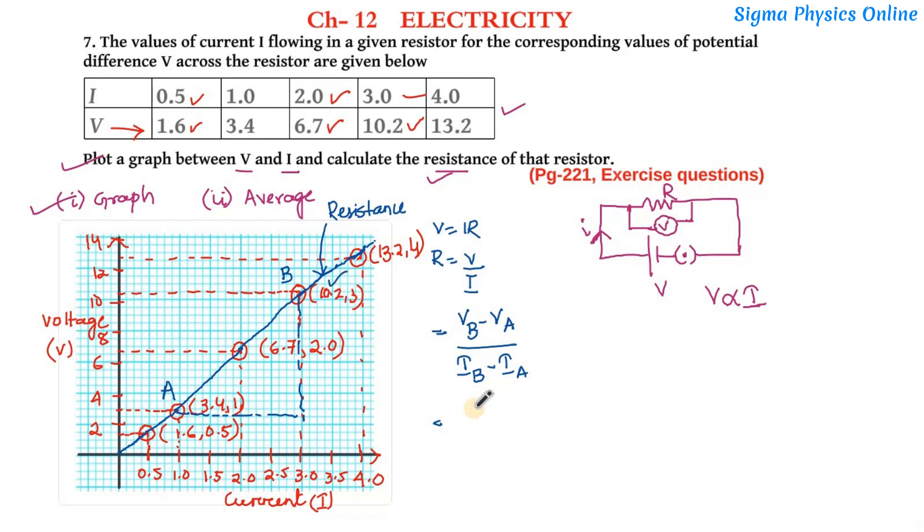Now the voltage at point B is 10.2 minus voltage at A is 3.4, divided by the current at point B was 3 minus the current at point A was 1, so it is 6.8 divided by 2 which is 3.4.